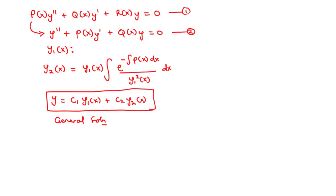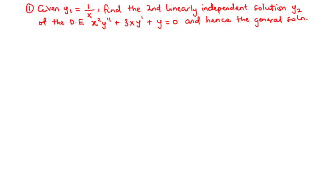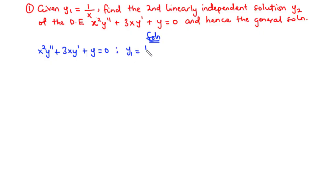In this lesson we are going to solve two examples. In the first example, given that Y1 equals 1/x, we are going to find the second linearly independent solution Y2 of the differential equation, and hence the general solution. We have the differential equation x²·y'' plus 3x·y' plus y equals 0, and the first solution is Y1 equals 1/x. The coefficients x² and 3x are non-constant, so we are going to divide through by x².